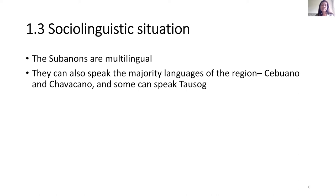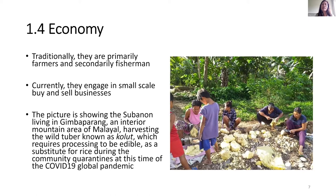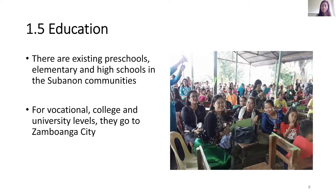Social linguistic situation. The Subanons are multilingual. They can also speak the majority languages of the region, such as Cebuano and Chavacano, and some can speak Tausug. Economy. Traditionally, they are primarily farmers and secondarily fishermen. Currently, they engage in small-scale buy and sell businesses. The picture shown is a recent picture of the Subanons living in Gimba Parang, an interior mountain area of Malayal, harvesting the wild tuber known as kolut, which requires processing to be edible as a substitute for rice during community quarantines at this time of the COVID-19 global pandemic.